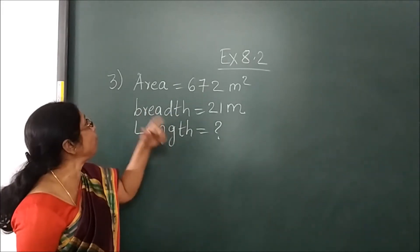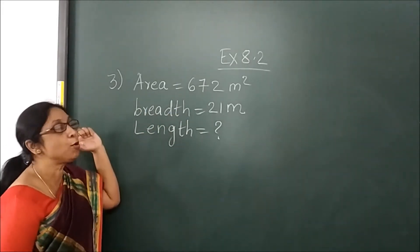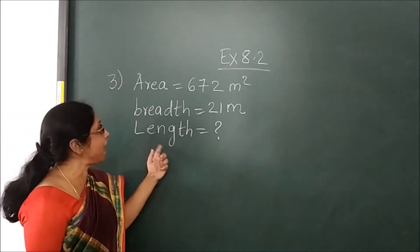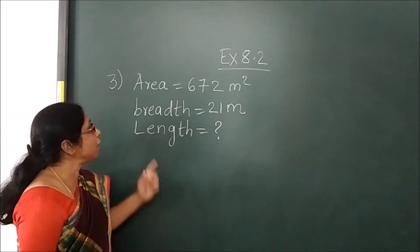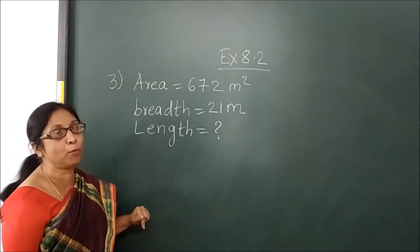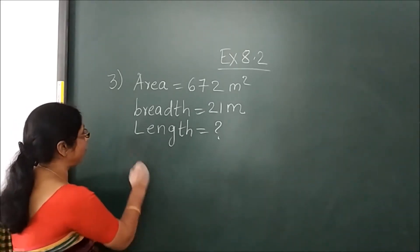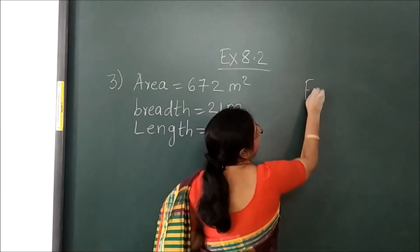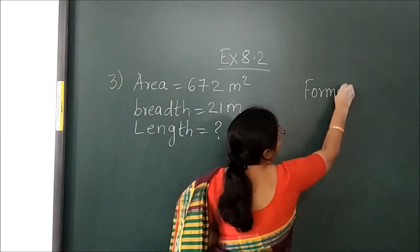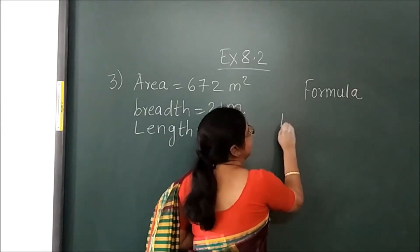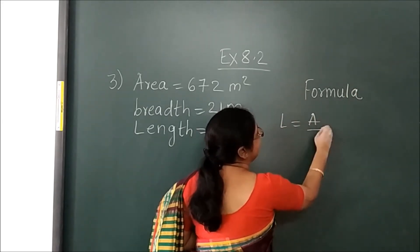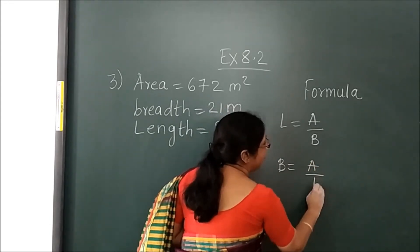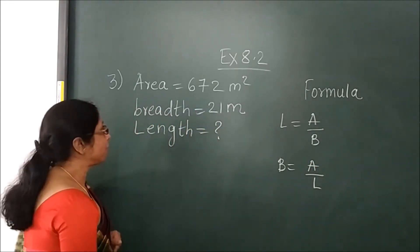Now in exercise 8.2 we will see the third question. Area is given, breadth is given, and length you have to find. So here you will use the formula of length. What is the formula of length in area? Let us note some formulas used for area: length formula is area upon breadth, and breadth formula is area upon length.